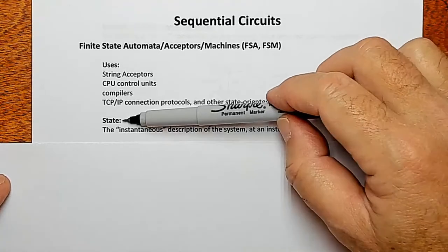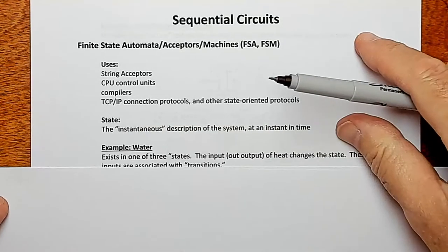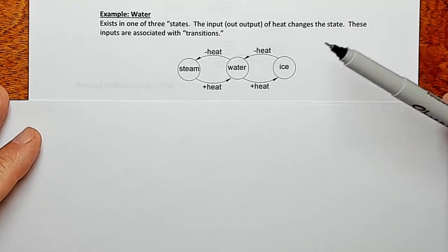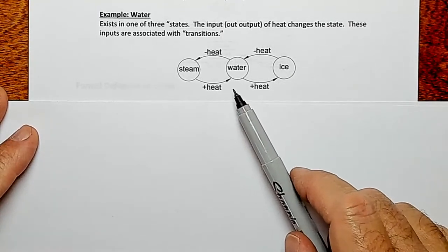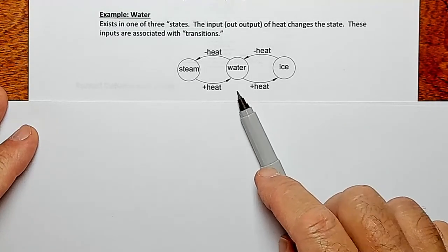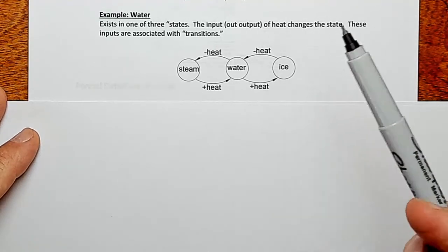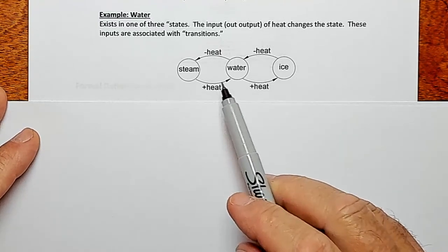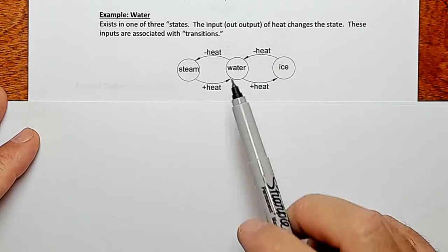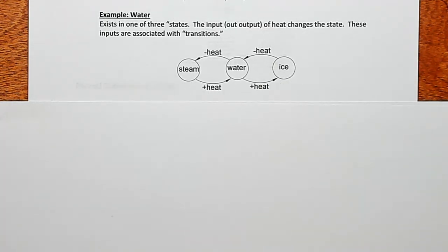The concept of state is something we need to define. State is the instantaneous description of the system at an instant in time. The classic example from physics is water. We live on planet Earth, which exists in a location in the solar system where water can exist in all three states — unlike other planets like Venus and Mars. So let's use the term H2O because we're talking about H2O in three different states.